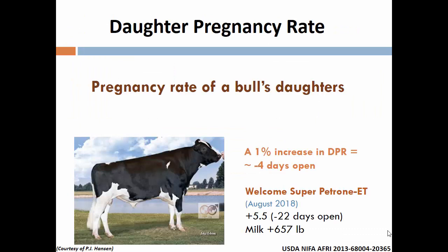Now we'll move on to daughter pregnancy rate. Essentially, it's the pregnancy rate of a bull's daughters, and a one-percentage-point increase in daughter pregnancy rate equates to about four fewer days open. We're looking at Welcome Super Patron as an example. In August 2018, this bull was plus 5.5 on DPR — so 5.5 times 4 gives us about 22 fewer days open, approximately one fewer estrous cycle.